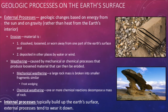Weathering is the process of breaking down material through chemical or mechanical means. Mechanical processes just physically break down the material — there is no change in the chemical composition, it is literally just smaller. Examples include frost wedging and glaciers. Chemical processes alter the actual chemical composition of the material. Examples include mainly water, seeing as it is the universal solvent, but also acids as well.